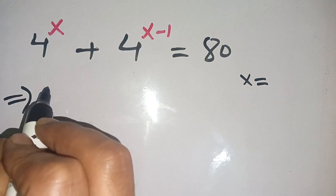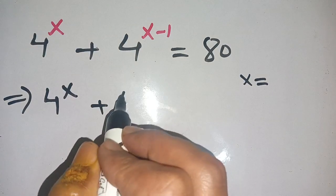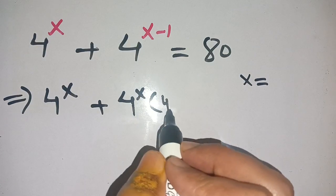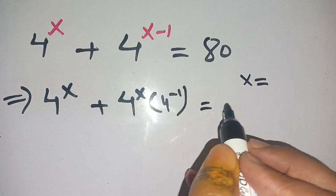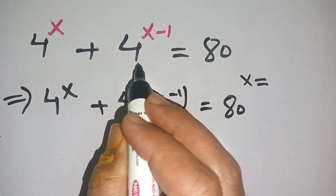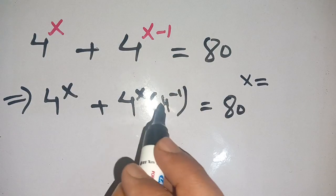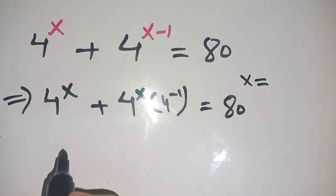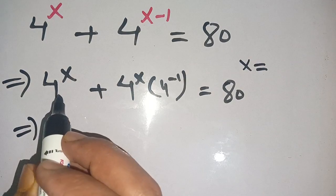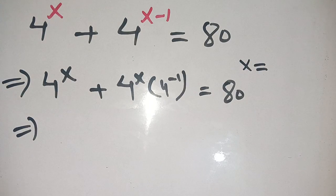We can write this as 4^x + 4^x × 4^(-1) = 80. This uses the identity a^(n+m) = a^n × a^m. We have 4^x in both terms.